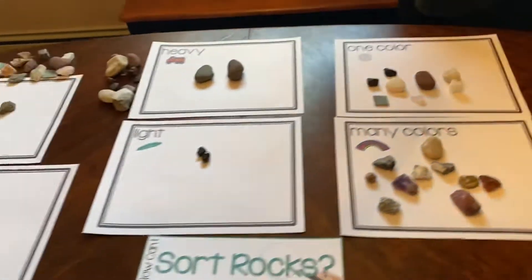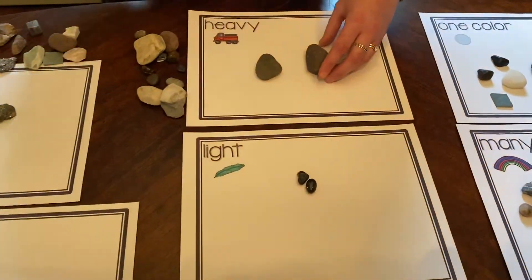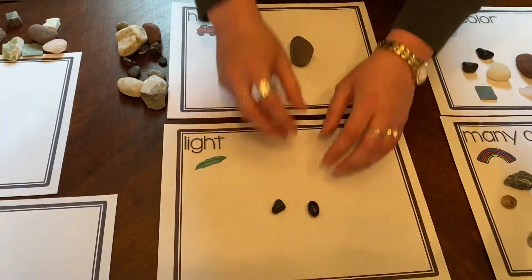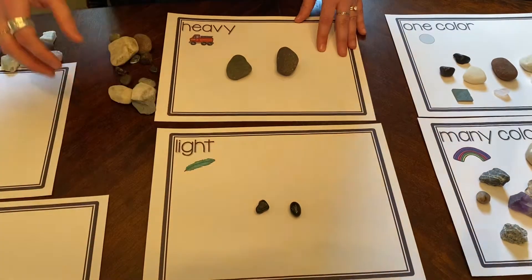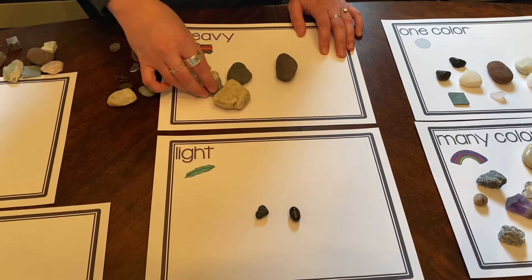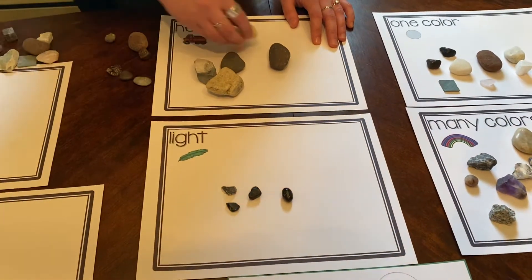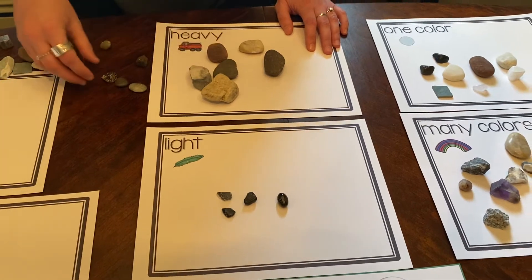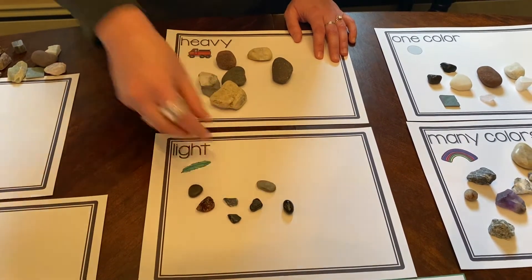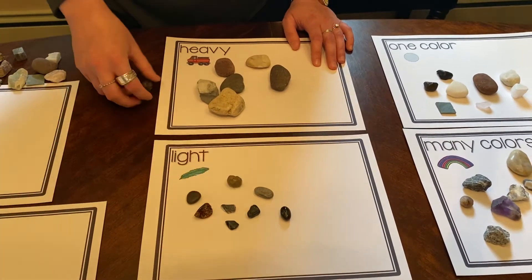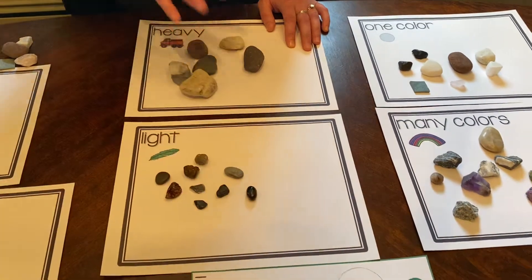Now we're going to go to weight. I've got the heavy rocks on this mat and the lighter rocks over here. I can simply feel in my hand — is it heavy to carry or lighter to carry? We'll put the heavy ones here and the lighter ones over here. The light ones that are little don't take much effort to carry. So that's sorting by weight.